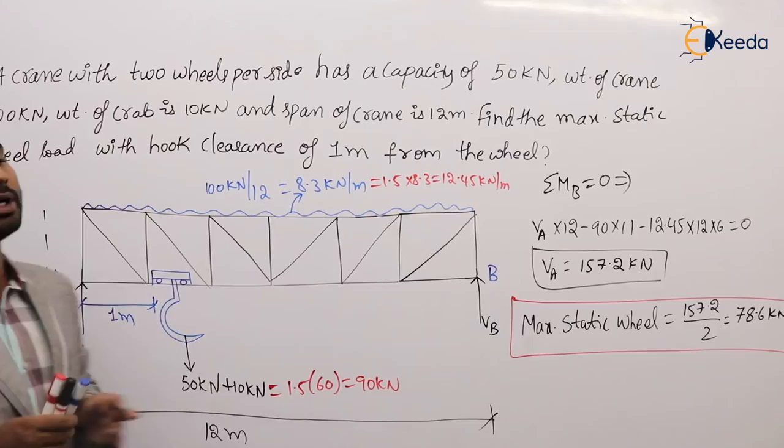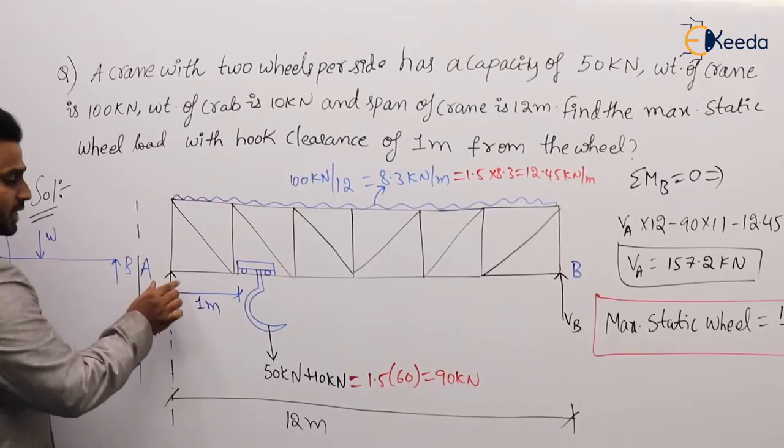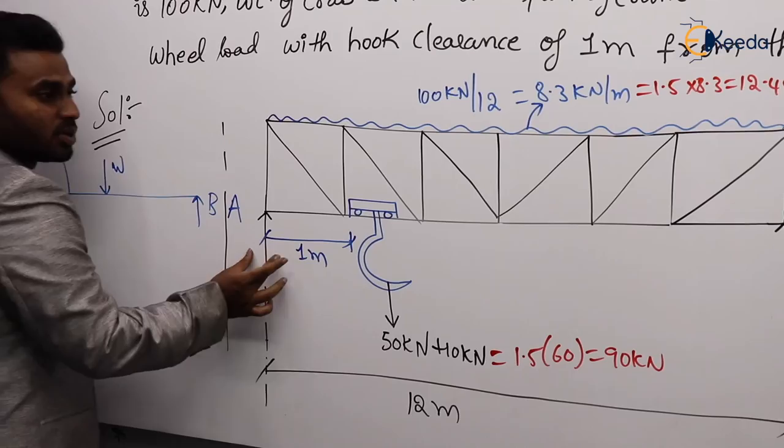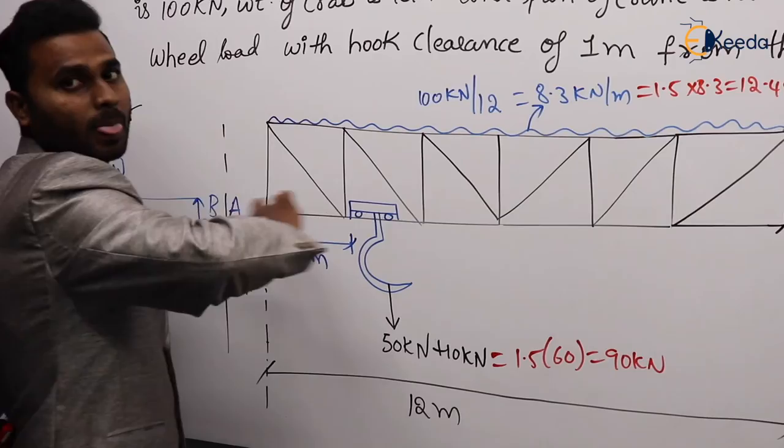Looking at the board: the wheels transfer the load to the rail, and from the rail it is transferred to the gantry girder. The gantry girder exists on both sides of the truss. The truss moves perpendicular to the board, and the trolley moves along the span. This clearance shown is the hook clearance.